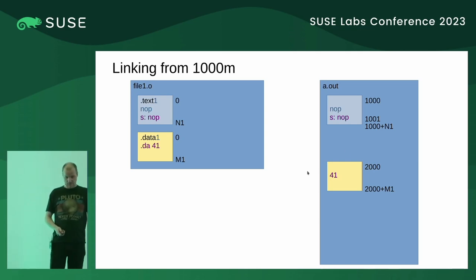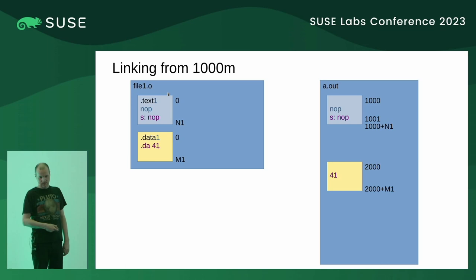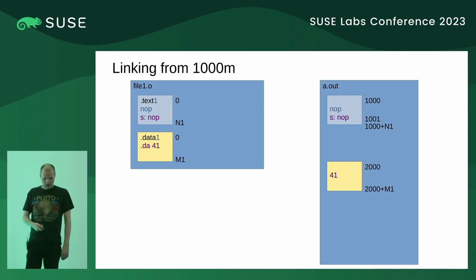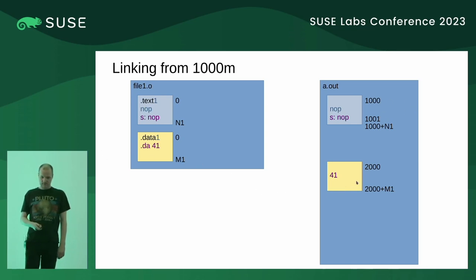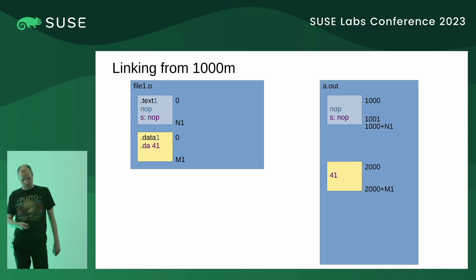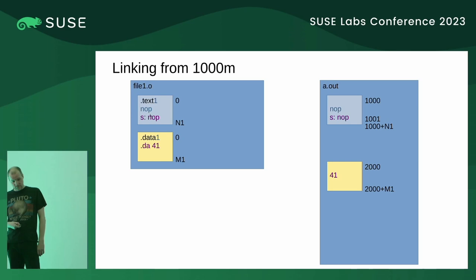On the left side we have input file one, and on the right side the output file. The input file contains two pieces called sections: a text section and a data section. The text section contains two instructions, NOPs, and the data section contains a number, 41. When we link this file, the linker places the text section and data section into different output sections, retaining the two NOPs and the 41. We also have a symbol named S marking the place of the second NOP — that is a function which does nothing.